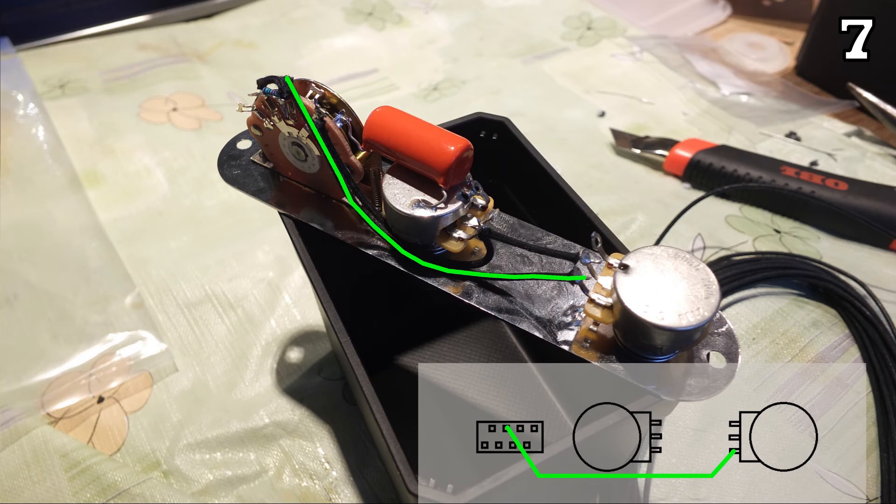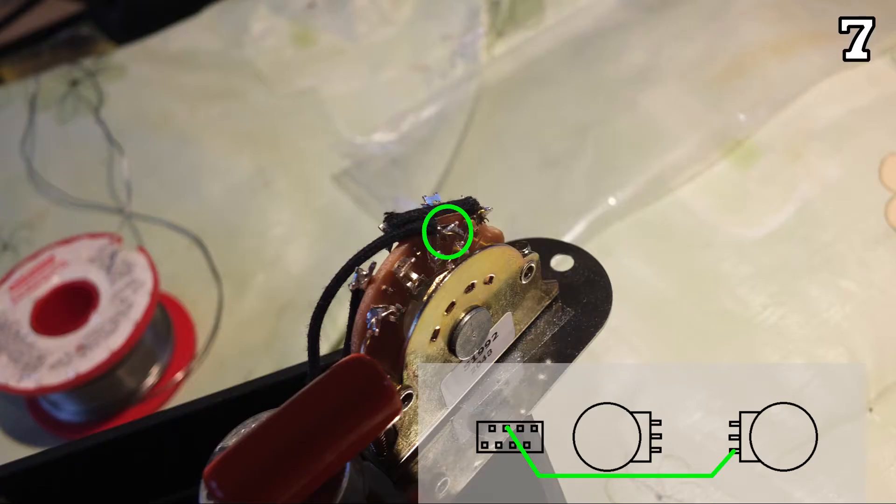Step number seven. This is a simple connection from the second pin from left on the top row of the three-way switch to the bottom pin of the blend pot. Here's another picture with a better view on the pin of the three-way switch. Please be aware that they did not rotate the schematics.